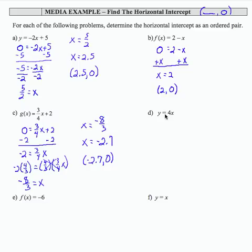Looking at part d, y equals 4x. Again, I'm going to replace y with 0. To solve for x, I technically divide 4 on both sides. So 0 divided by 4 is 0 equals, and then that reduces to 1. So x equals 0.